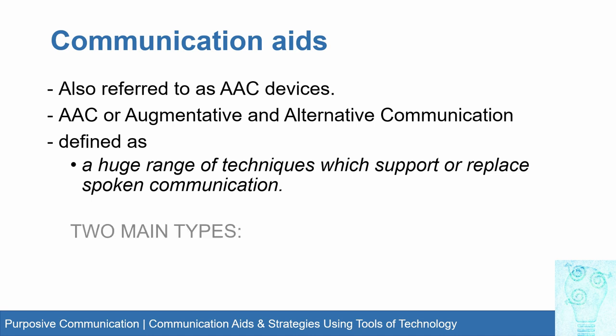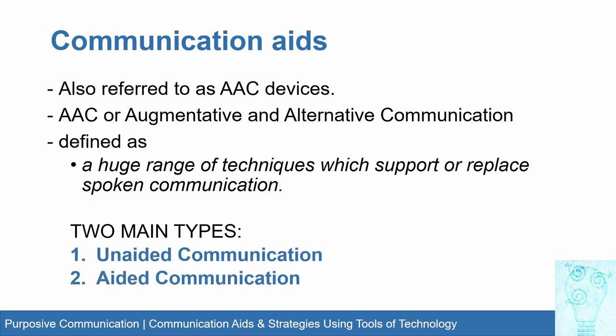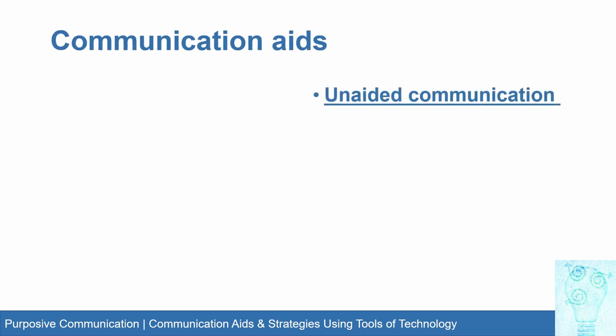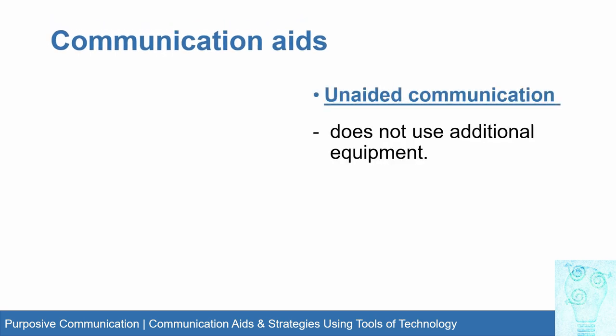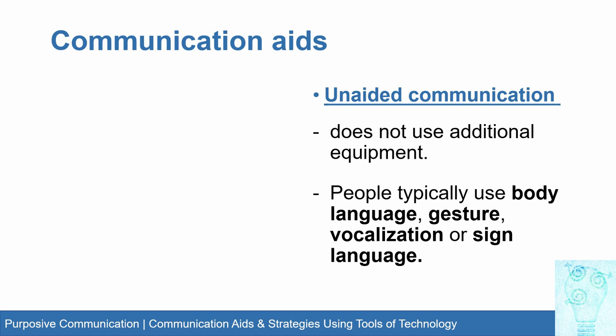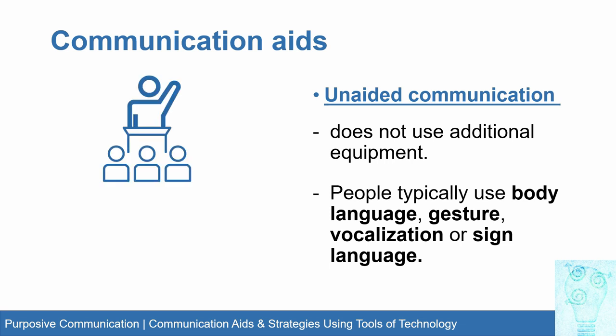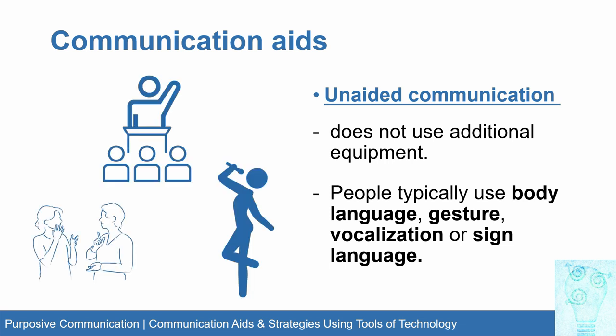There are two main types of communication aids: unaided communication and aided communication. Unaided communication does not use any additional equipment like your phone or laptop. People typically use body language, gesture, vocalization, or signed language — nothing except the faculties that you have as a person, no equipment added.